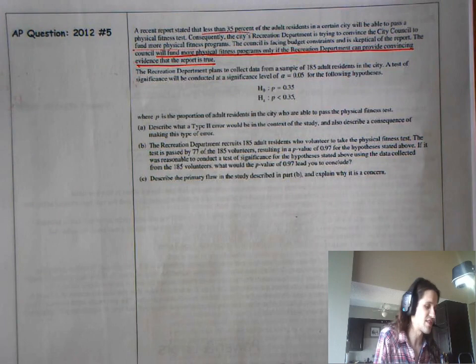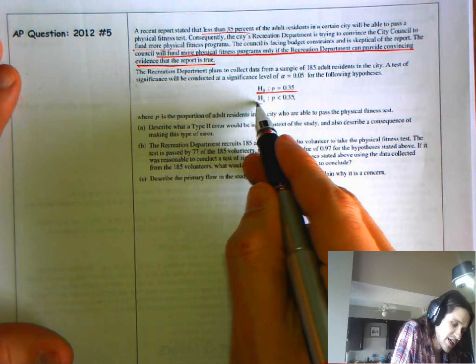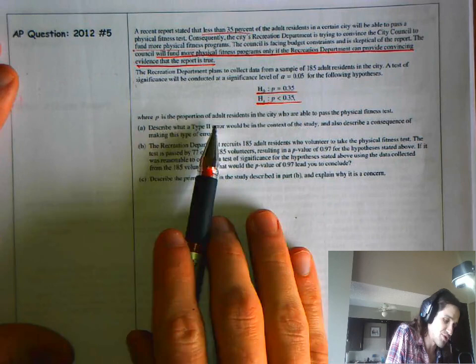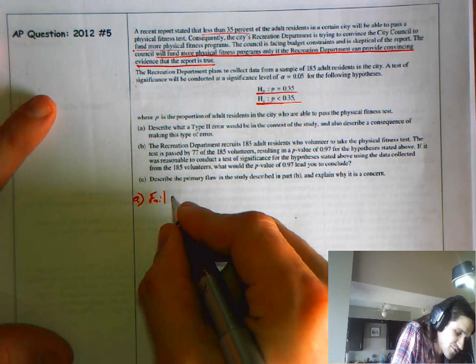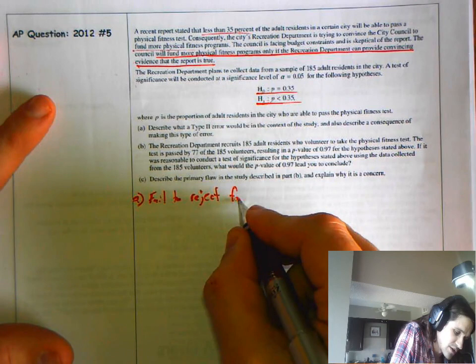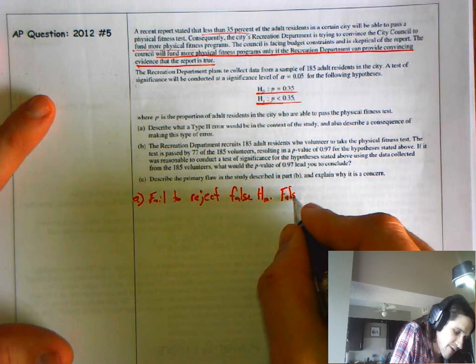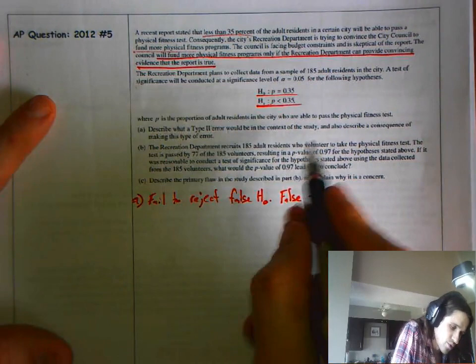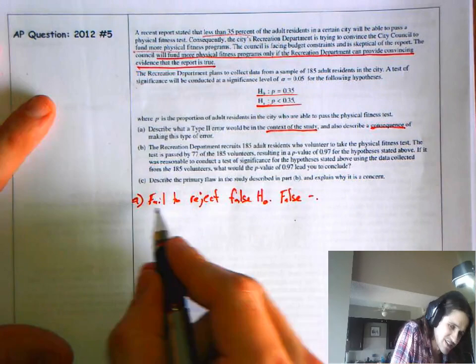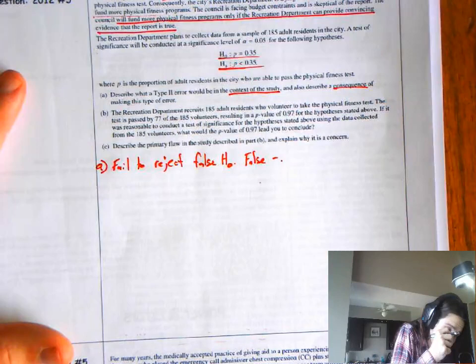Great. So we assume they can do it and we need evidence to show that they're bad. Okay, describe what a type 2 error would be. Well, type 2, what is type 2 error? That would be failing to reject a false null hypothesis. That is a false negative. But that's not really the answer. What is it in the context of the study? And what's a consequence of this?